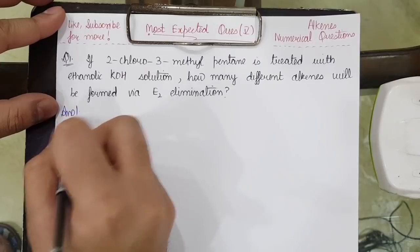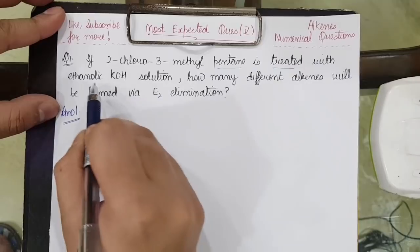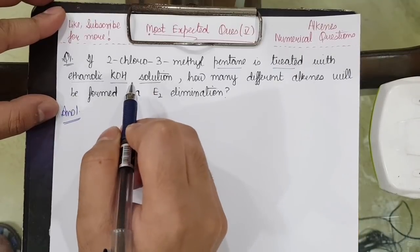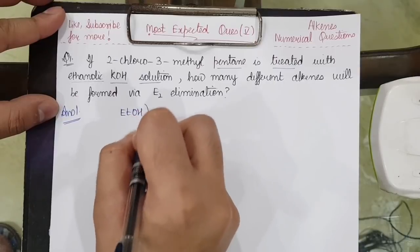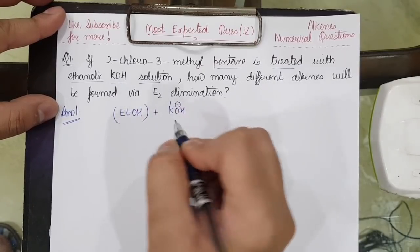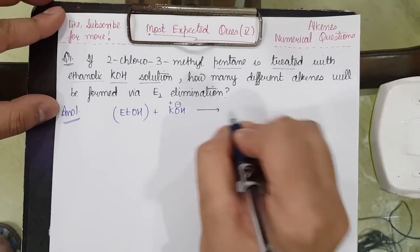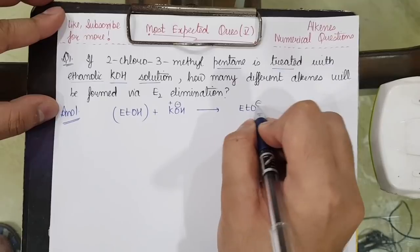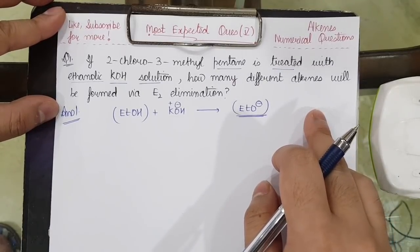Question number 1: If 2-chloro-3-methylpentane is treated with ethanolic KOH solution, ethanolic KOH meaning ethanol is present along with KOH. KOH means K plus OH minus. OH minus will extract the most acidic hydrogen, so it will become ETO minus, that is the actual base which will react.